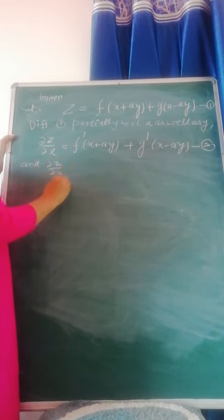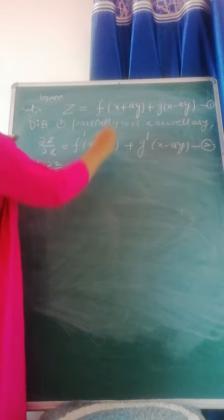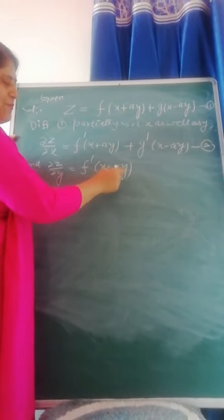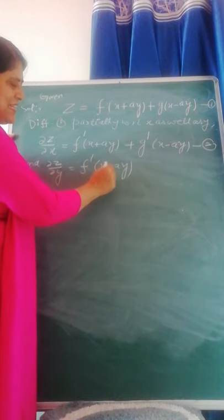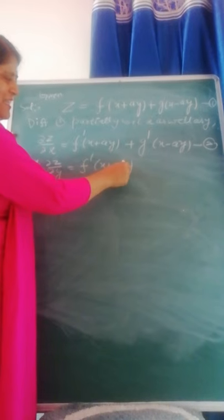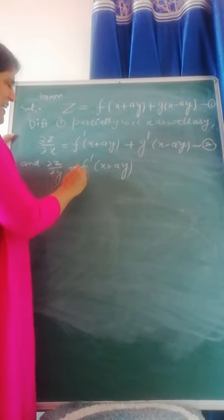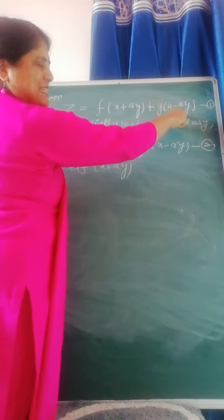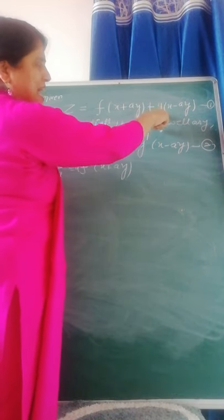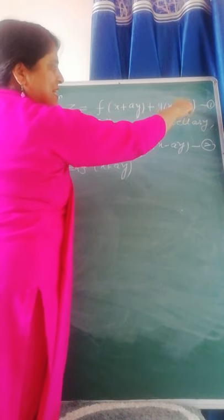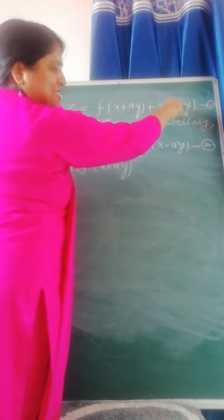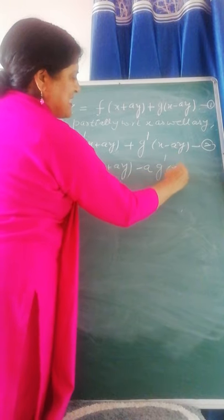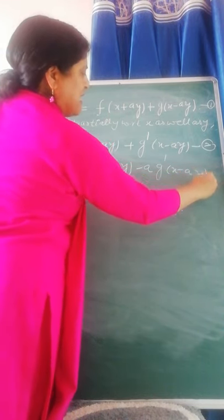Now differentiating equation 1 with respect to y, we get: f'(x + ay) — here you take x as constant, the derivative of ay with respect to y is a — so we get a·f'(x + ay). Then the derivative of g(x − ay) with respect to y: the derivative of (−ay) is −a, so we get −a·g'(x − ay). Let this be equation 3.